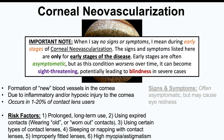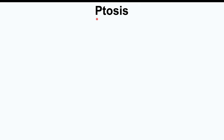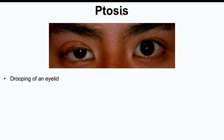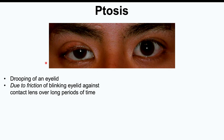Corneal neovascularization is generally asymptomatic and will only be detected in most cases by an optometrist. In some cases, there may be some eye redness if there is significant neovascularization. Another condition that can occur in contact lens wearers is ptosis — a drooping of the eyelid. Ptosis can occur due to friction of the blinking eyelid against the contact lens over long periods of time, which can weaken the muscles responsible for holding up the eyelid.